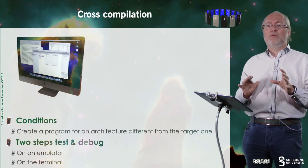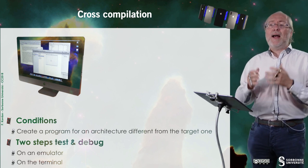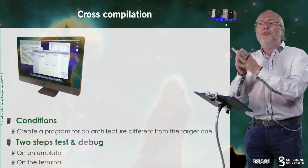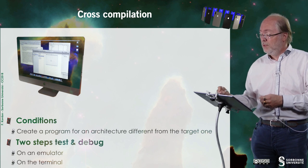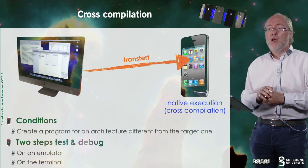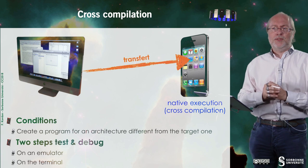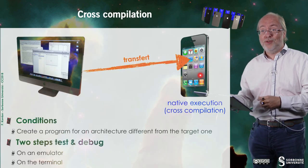Let's have a look at cross-compilation. Let's imagine you are developing on a main computer that has a given architecture, but you have to create code that will execute in another architecture. The condition for cross-compilation is when you create a program on a given architecture that is different from the target one. Typically, by pure hazard, on an Intel processor, I have a program that creates code, but the code will have to be executed on an ARM processor.